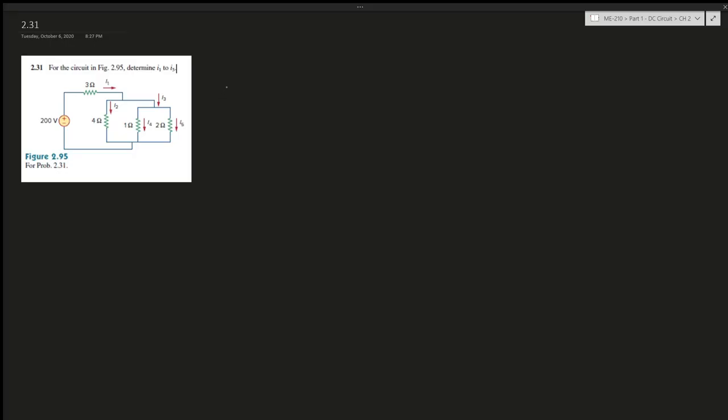Problem 2.31. For the circuit in the figure, determine I1 to I5. Looking at the circuit, there is a voltage source and resistances - two parallel resistors combined in series with a 3 ohm resistor. It is best to find the equivalent resistance of the entire circuit, use the voltage, and then use Ohm's law to find the current.